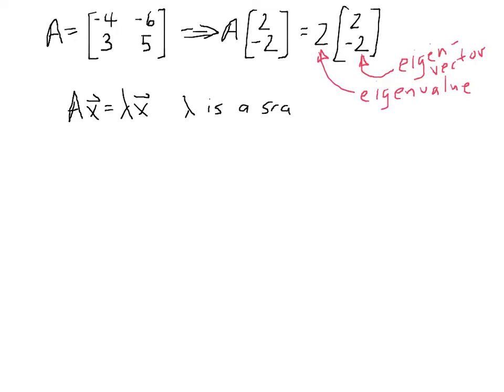So basically what we're looking for is a scalar such that multiplying a vector x, well actually we're looking for the vector x itself and the scalar, to where multiplying x by A is the same as multiplying by the scalar lambda.